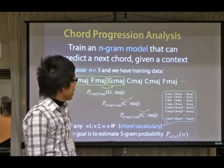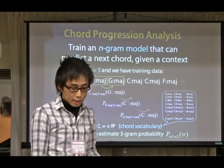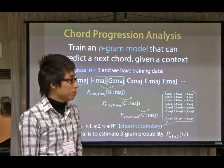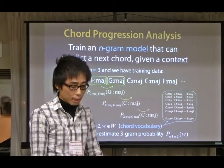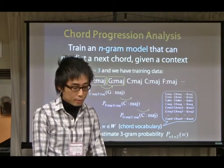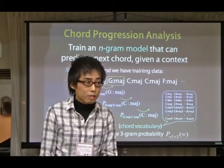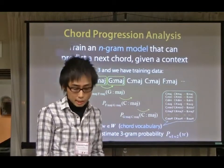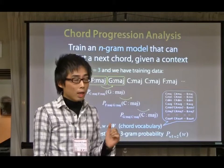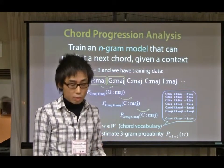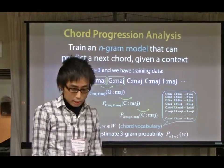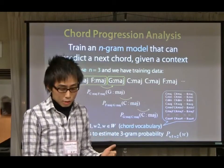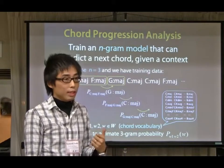Regarding sequential chord progression analysis, we aim to train an N-gram model that can predict a next chord given preceded chords, called a context. This is a standard problem specification. We assume N is equal to 3, and we have training data such as C major, F major, G major, and so on. By using this data, our goal is to estimate the trigram probability distribution P(W1,W2,W3) for any chord triplet contained in a chord vocabulary. We assume the chord vocabulary is given in advance by humans.